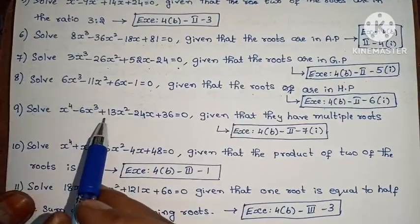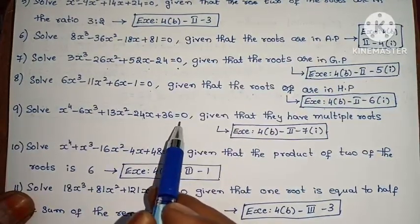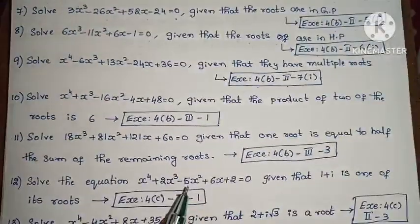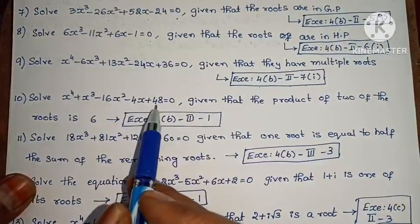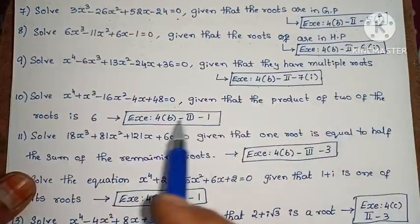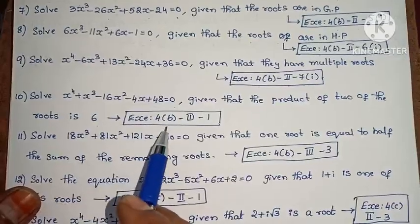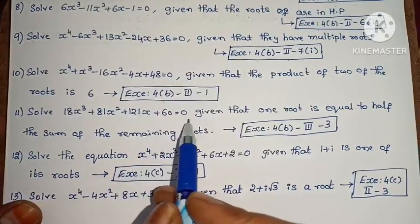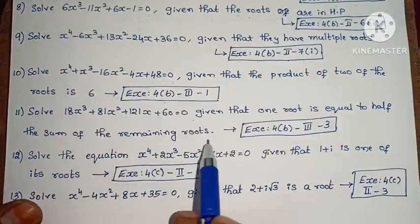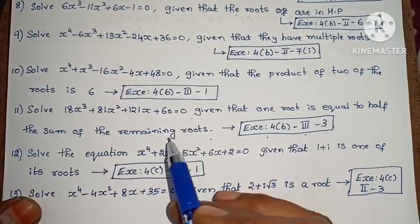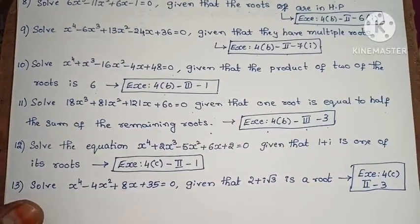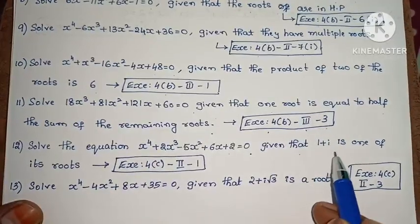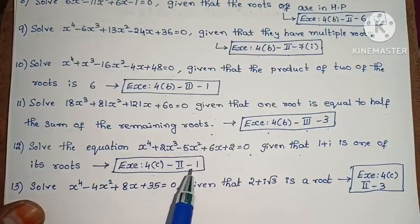Next, solve x⁴ minus 6x³ plus 13x² minus 24x plus 36 equals 0, given that it has multiple roots. Exercise 4A, second Roman numeral, seventh, first one. Next, solve x⁴ plus x³ minus 16x² minus 4x plus 48 equals 0, given that the product of two of the roots is 6. Exercise 4A, third Roman numeral, first one. Next, solve 18x³ plus 81x² plus 121x plus 60 equals 0, given that one root equals half the sum of the remaining roots. Exercise 4A, third Roman numeral, third one.